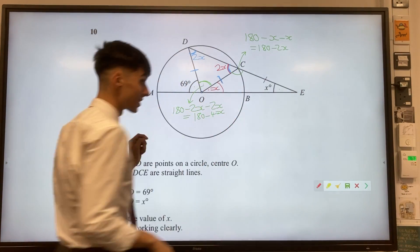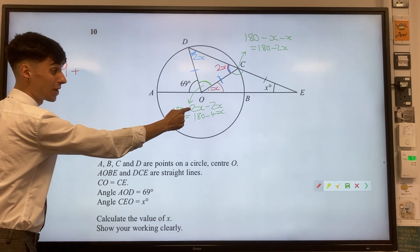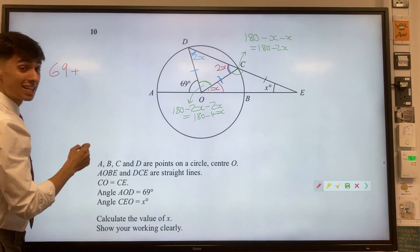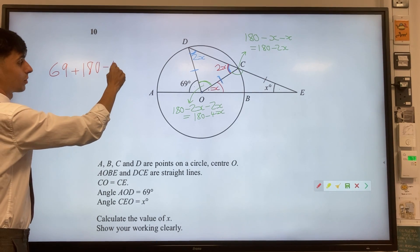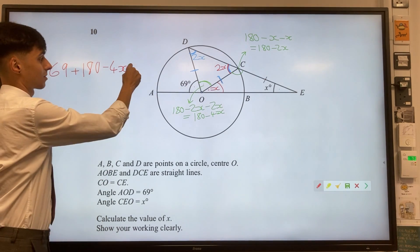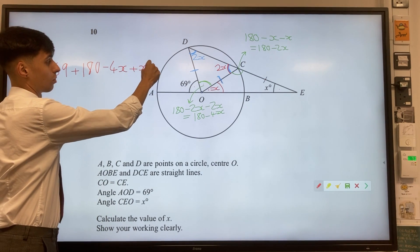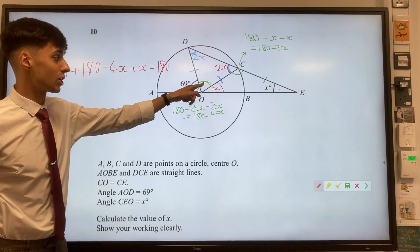So we can say 69, I'll go over this side, 69 plus this angle here, which was 180 subtract 4x, take away 4x, plus our third angle, which was x. Well, these three must add to give us 180 because they live on a straight line together.